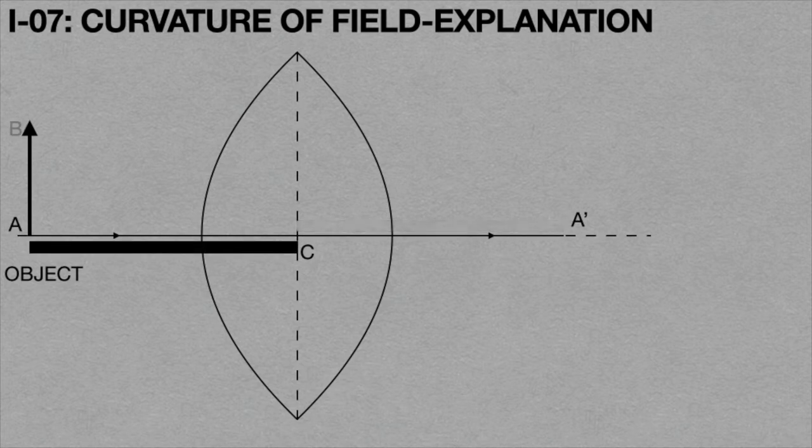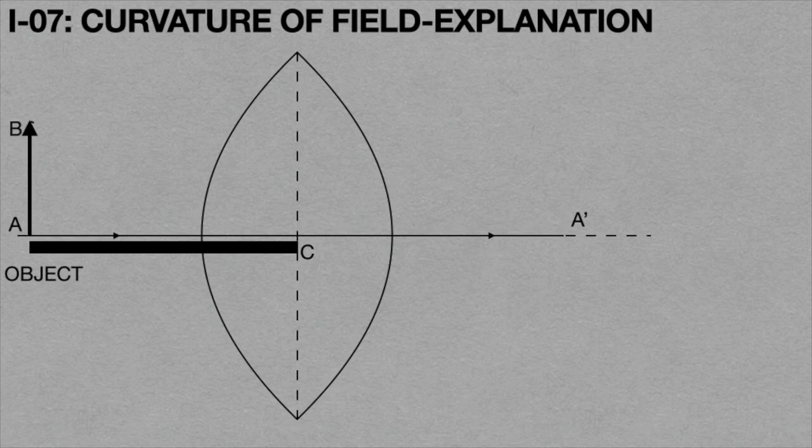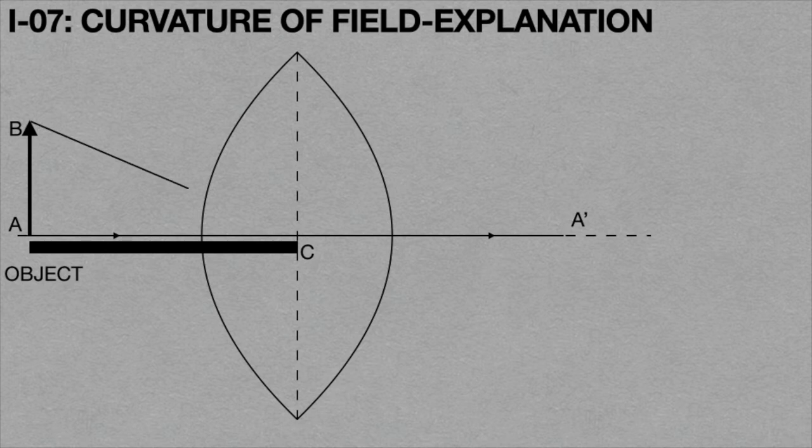Similarly, the light rays coming from point B pass through the center of the lens C, and then it forms an image B dash for point B.